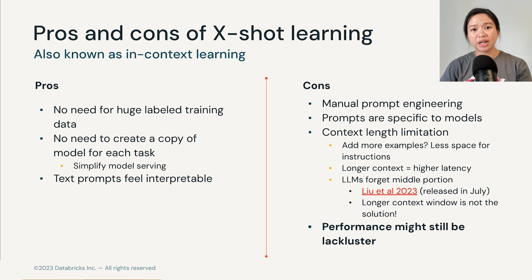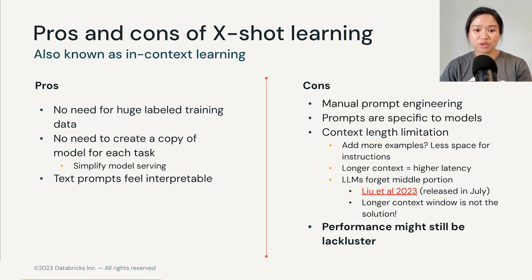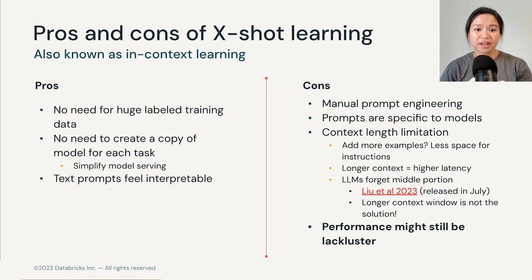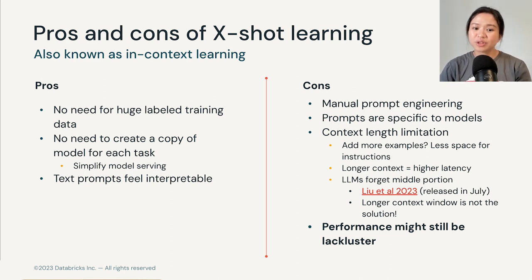We also often encounter the limitation of context length. If we add more examples, that leaves less space for instructions. And if we use a model with a larger context window, that gives us higher latency at serving time. There is also a recent research paper showing that longer context windows may not be the solution for future LLMs, because LLMs tend to forget the middle portion of the context provided. So ultimately, this is why we turn to fine-tuning — because even with few-shot learning, model performance might still be lackluster.